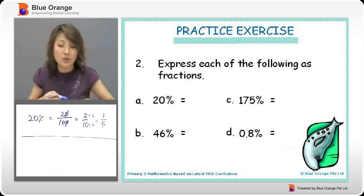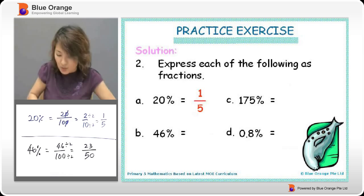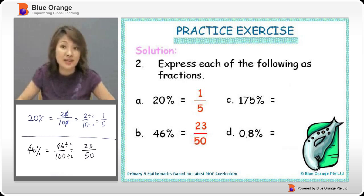Next, we look at B, which is 46%. We can change it to 46 out of 100. Can we reduce it further? Of course. We divide it by 2. And by 2, we get 23 over 50. So we get the answer.